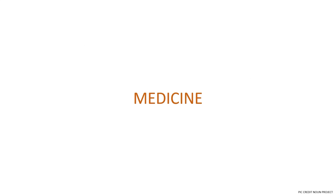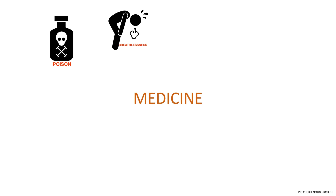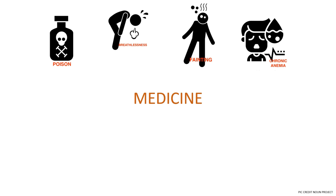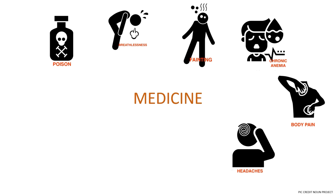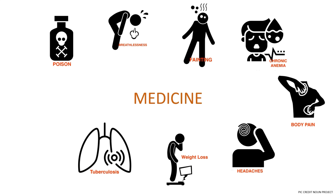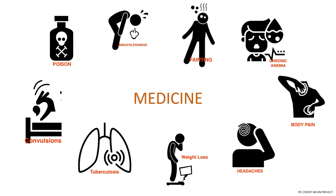In the medicine department, which is an OPD setting, women come with a myriad of symptoms. There can be a history of consumption of poison, breathlessness, fainting spells, swelling or tenderness, repeated health complaints, chronic anemia, body ache, headache, weight loss, pyrexia of unknown origin, tuberculosis, and irritable bowel syndrome — these are all symptoms that may be seen.